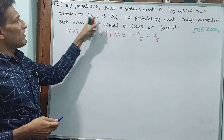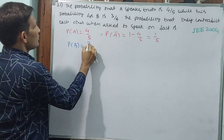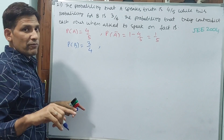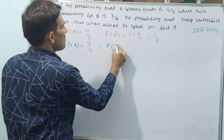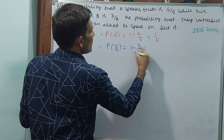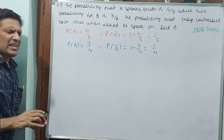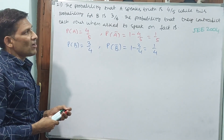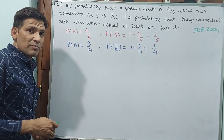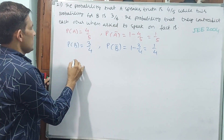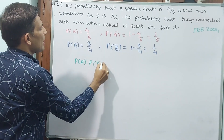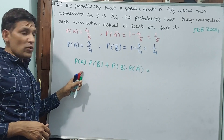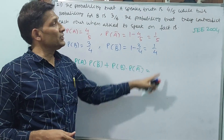Probability for B is 3 by 4. That means probability of B is 3 by 4. If he speaks 4 times, 3 will be correct and 1 will be wrong — 1 by 4 will be false. P of B bar equals 1 minus 3 by 4, which is 1 by 4. Now, what is being asked: the probability that they contradict each other. The formula is P of A into P of B bar plus P of B into P of A bar — that means A true and B false, plus B true and A false.